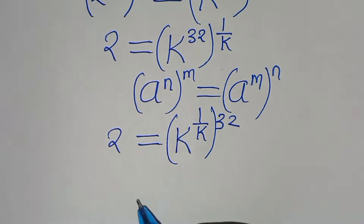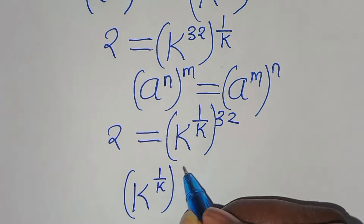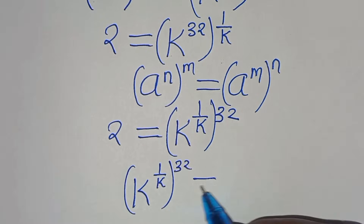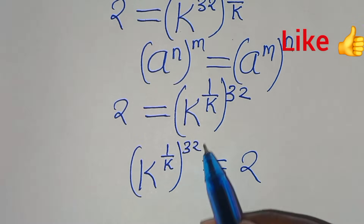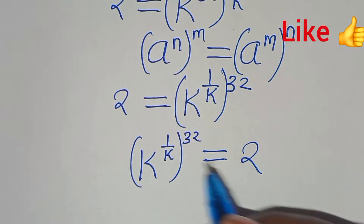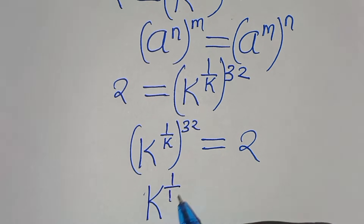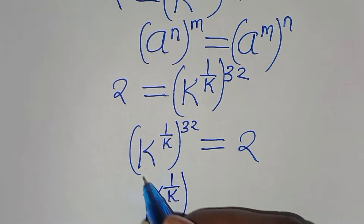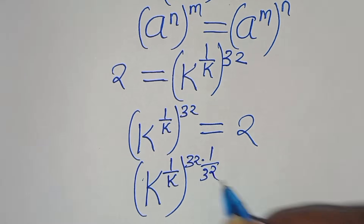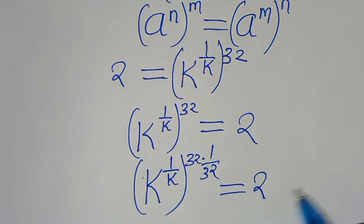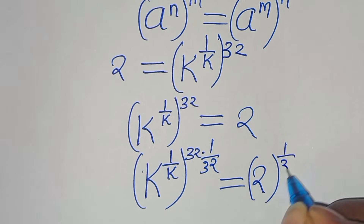We can rewrite this as: k to the power of 1 over k, raised to the power of 32, equals 2. The next step is to eliminate the 32. To do this, we raise both sides to the power of 1 over 32, giving us 2 to the power of 1 over 32.